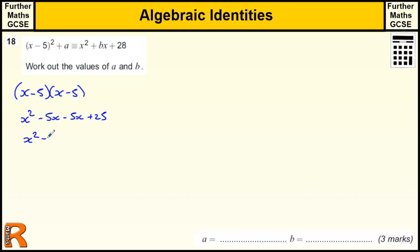So we've got x squared minus 10x plus 25, and then we're going to add on this a, so plus a, which is just a number. It's not ax, it's just a.